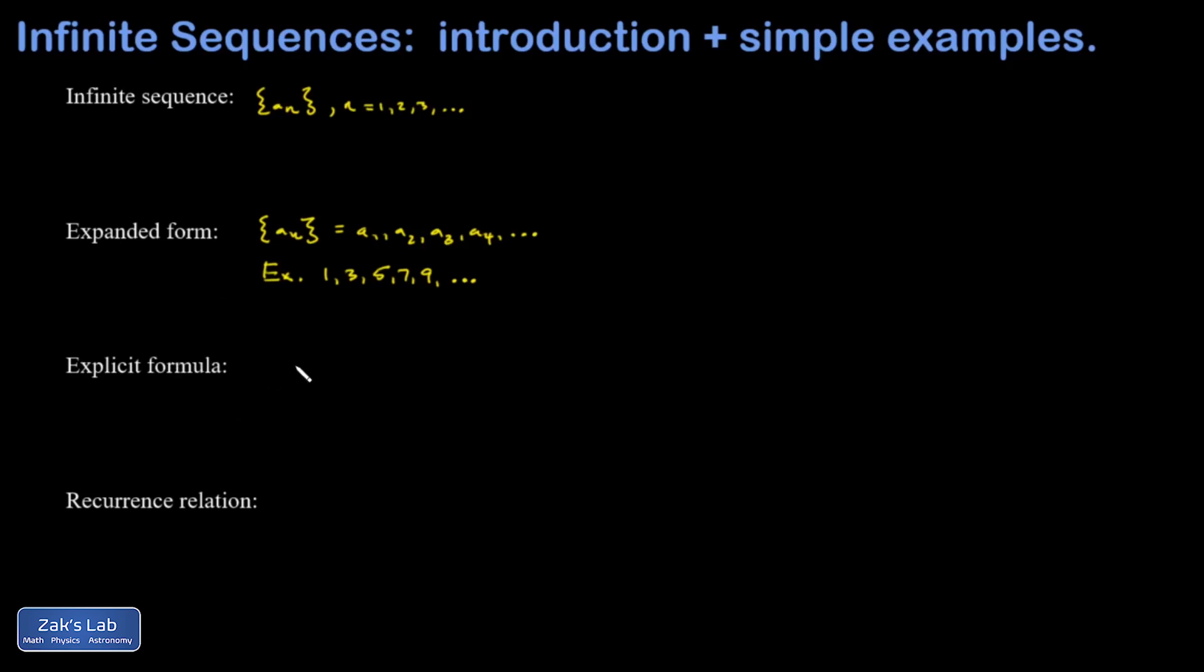What about the explicit formula for an infinite sequence? That's the case where you can actually use a function to generate the a_n. So each a_n is expressible as some function f evaluated at some number n, where n is one, two, three, and so on. I could say that f is defined for all natural numbers, so all n belonging to the set of natural numbers. That just means one, two, three, and so on.